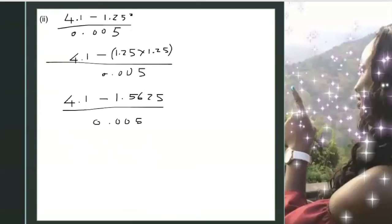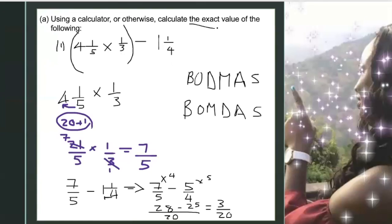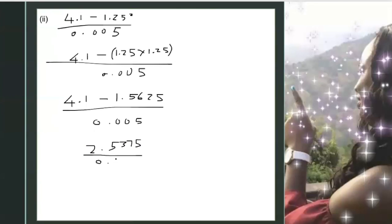Now the next part, we're going to calculate the numerator. So using a calculator, you'd enter 4.1 minus 1.5625. That will give us 2.5375. If you realize, I'm not rounding it at all because the question above says it wants the exact value, so we can't round off.